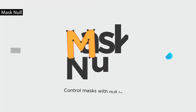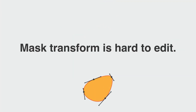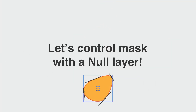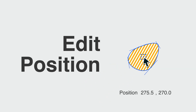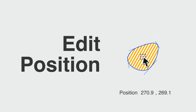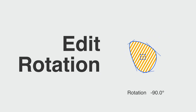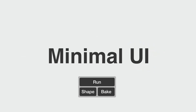With Mask Null, you can control masks using null layers while maintaining a live, editable connection. With just one click, it creates a null at the mask center and allows you to animate mask position, scale, rotation, and opacity by keyframing the null. You can bake and unlink the result or instantly convert the mask into a matching shape layer, all through a clean, minimal interface.